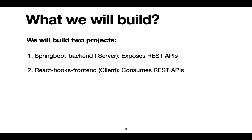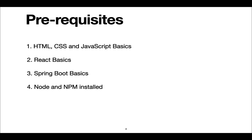In this course we are going to build two projects: a Spring Boot backend application that exposes REST APIs, and a React Hooks frontend that consumes those REST APIs. The prerequisites for this course are HTML, CSS, and JavaScript basics, a basic understanding of React JS, a basic understanding of Spring Boot, and Node and npm installed on your machine.